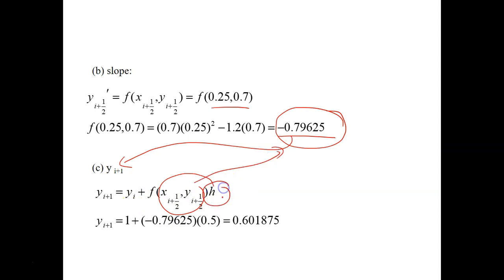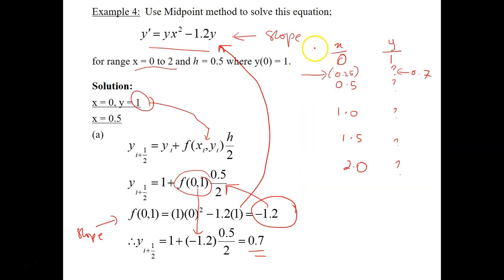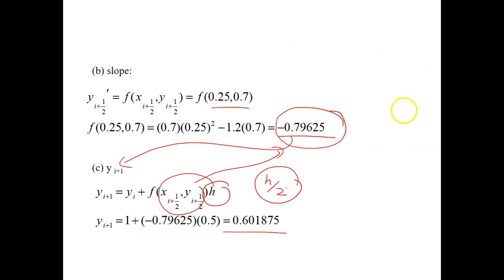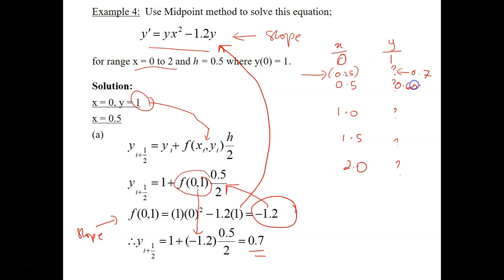So y_(i+1) equals y_i plus f, the slope here, and the step size. We use the same h—it's no longer h over 2. This is only to calculate the midpoint; you need to stick with h here. This is just a simple Euler general formula. So y_i is the initial condition, 1 plus the slope here times 0.5. Then only you get your answer for the second data: 0.601875.